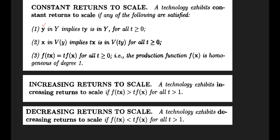This holds for all t greater than zero. t is any scalar — it depends upon the producer and tells you about the level at which you want to increase your production. This is all about the possibility of the increase in production.